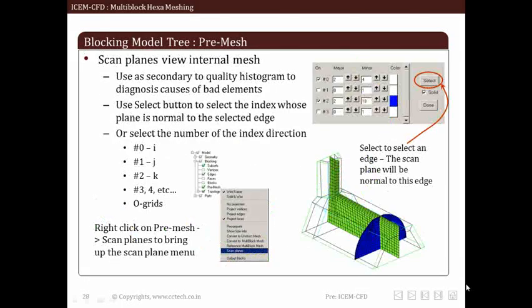Next within the pre-mesh is scan plane option. The scan plane option plays major role while troubleshooting for mesh quality. First of all, it should be clear that scan planes are viewed for pre-mesh. It displays internal volume grid. By applying select button, we have to select edge whose plane is normal to selection. This plane will be displayed on the screen.